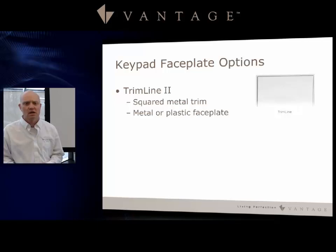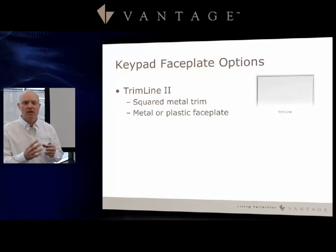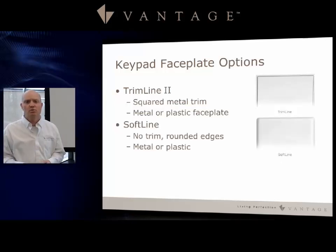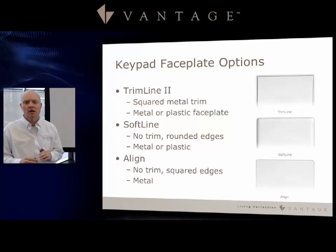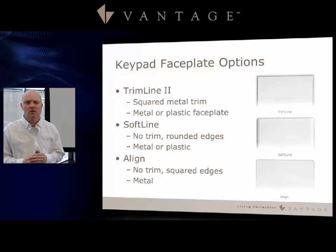Let's talk about faceplate options. The first is the Trim Line 2 — a square metal edge with a metal or plastic faceplate insert that clips over the top. The next is the Soft Line, which has no trim, rounded edges, and is available in both metal and plastic. The third option is the Align, which also has no trim and is similar to the Soft Line but with slightly more squared edges, available in metal.